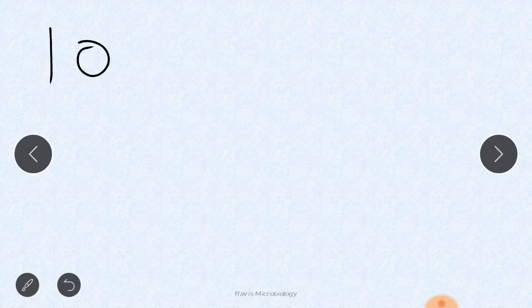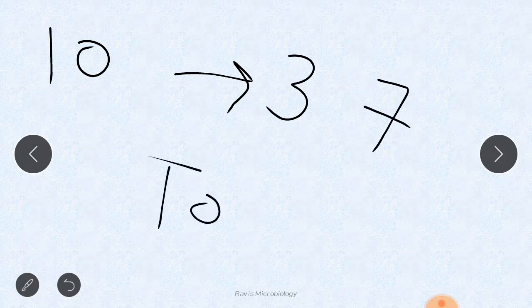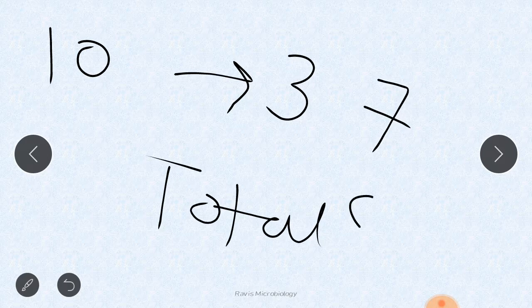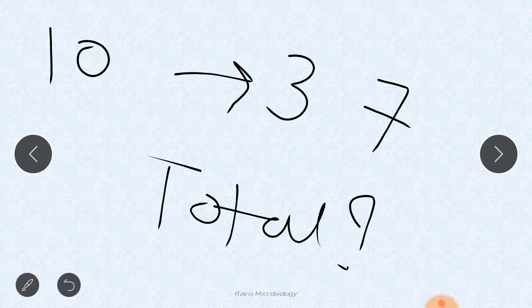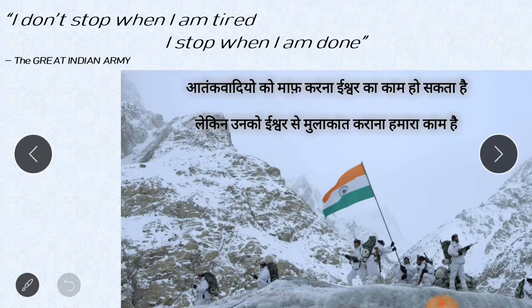Now I will give you homework. Listen properly: you take a sample of 10 individuals and mark them all. In the second sample, you get 3 marked and 7 unmarked individuals. What will be the total number of individuals? You have to count and mention in the comment section. If you got the right answer, then I will be satisfied that I taught you well. Thank you, Jai Bharat.